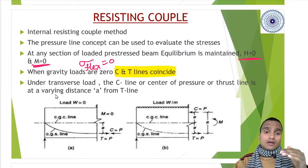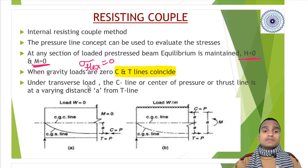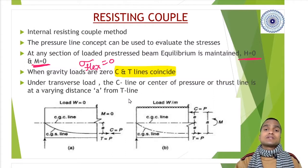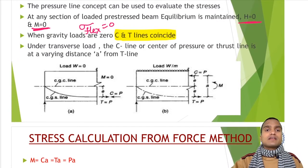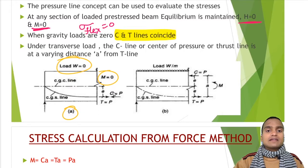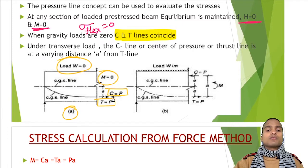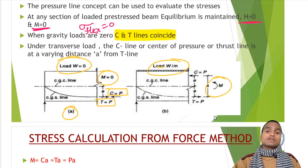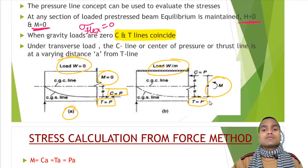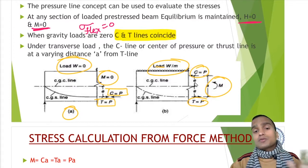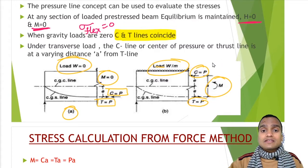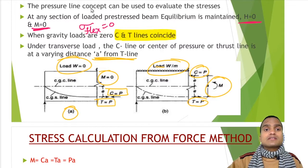When gravity loads are zero and C and T lines coincide, as we increase load, the compression line will shift apart. Under transverse load, the C-line or center of pressure or thrust line is at a varying distance from tensile line. When there is no load and no moment, C equals P and T equals P, both coinciding. But if there is external load and moment, then T equals P and C equals P, but they will not coincide - there will be a distance between them.